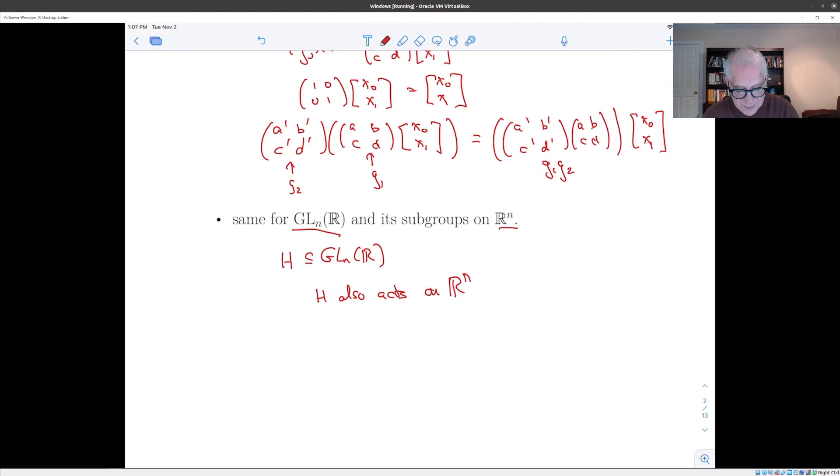then H also acts on R^n. Namely, just using the same map g cross x to x, but only taking elements in h. And so you can consider, if you just use matrix multiplication times vectors, you can have the orthogonal group act. You can have the special orthogonal group act. You can have SL_n(R) act. They all act through the same formula.